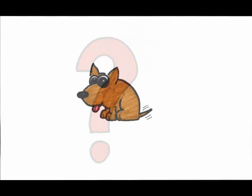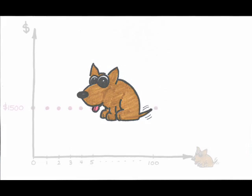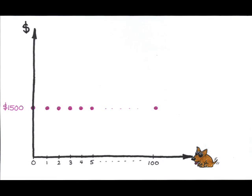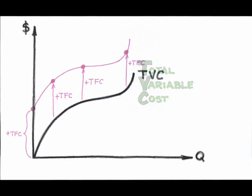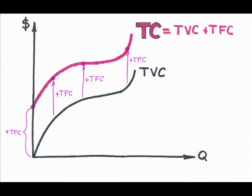What do the costs of the fixed resources look like? If you think back to our puppy example, the overhead cost was $1,500 if we had no puppies, $1,500 if we had one puppy, $1,500 if we had two puppies — $1,500 had to be paid no matter how many puppies. For every level of output, all we have to do is tack on the total fixed cost to whatever variable costs we have. What we get as a result is our total cost curve, which is really just our total variable cost curve shifted upward by the amount of those fixed costs.